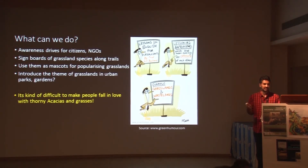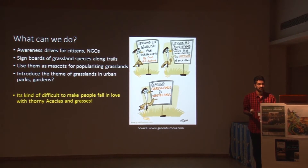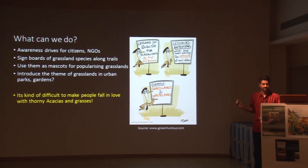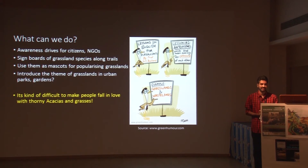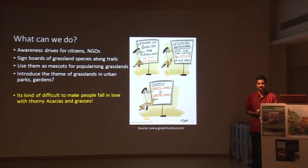What can students of landscaping probably do? There is a poster made by Rohan Chakravarti showing very nicely how grasslands are being depleted. You can do awareness drives, but the main problem is it's really difficult to make people fall in love with acacias and grasses. Can we use endemic species as mascots for conservation? Probably yes. Can we introduce the theme of grasslands in urban parks and gardens? That's an open question.